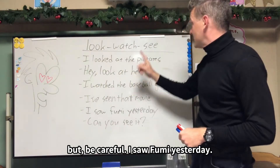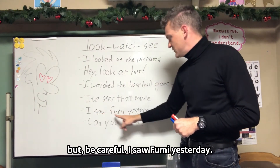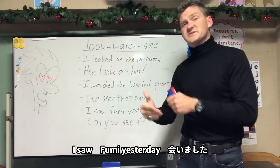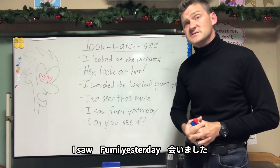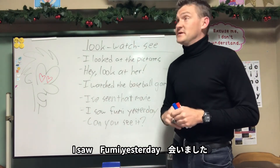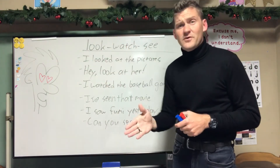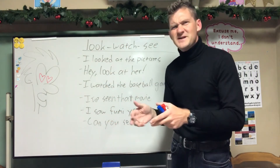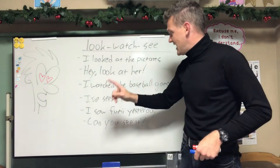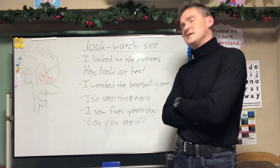But be careful with see. I saw Fumi yesterday — that means 会いました, you met someone. 昨日Fumiちゃんに会いましたよ. My students often say 山に蛇を会えました, but the correct English is: I saw a snake — chance encounter. I saw a snake in the mountain.